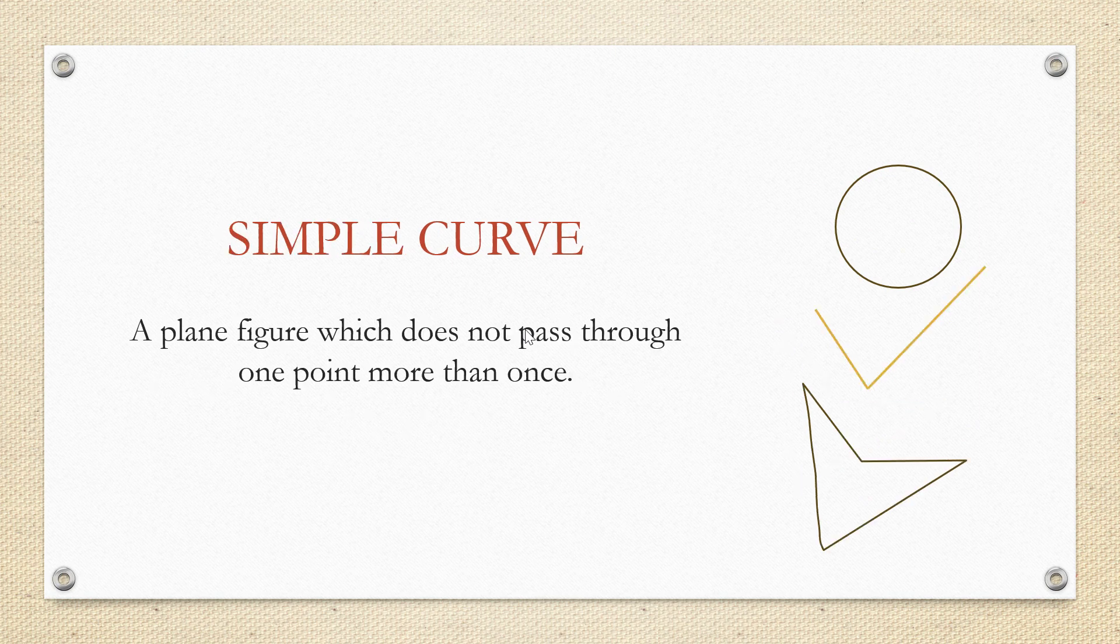Simple curve is something which doesn't have its lines passing through one point more than once. So all these circles, oval, rectangle and the shapes shown here are simple curves.